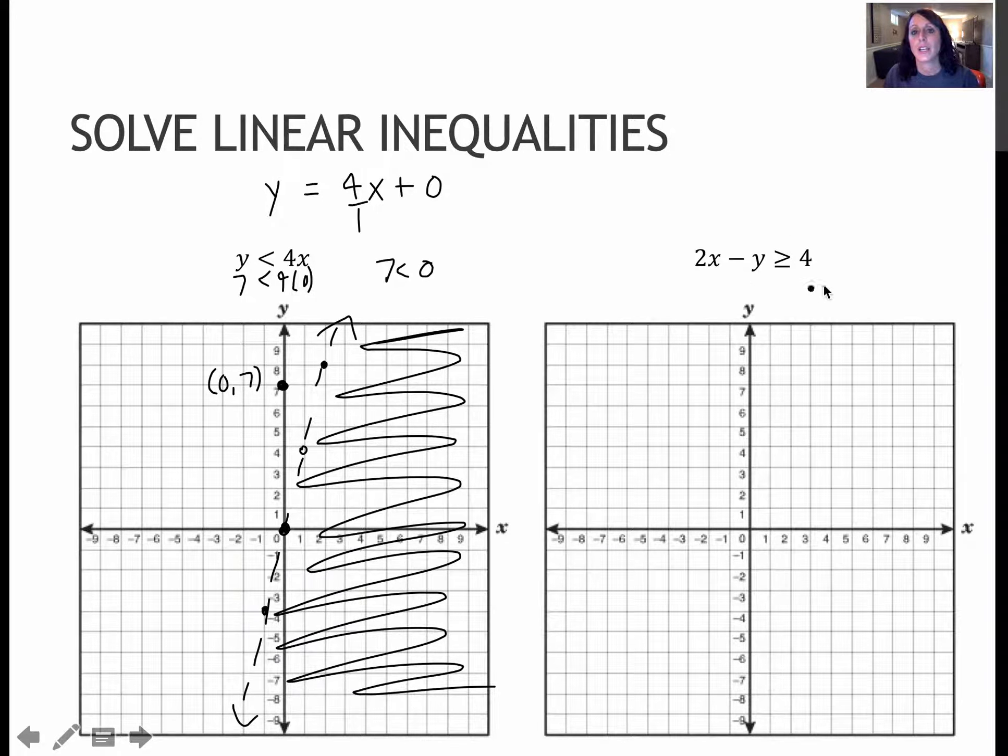And then on my last one here, this is standard form. So I would use that cover-up trick to find the points. I would cover up the 2x, and that would give me negative y equals 4, or y equals negative 4. I would cover up the negative y. That would give me 2x equals 4, so x equals 2. That's one way to graph it.